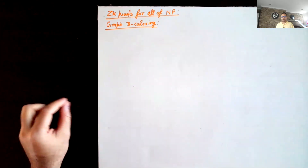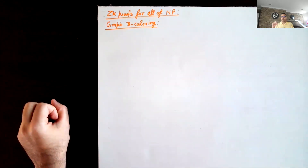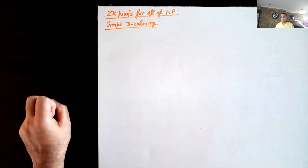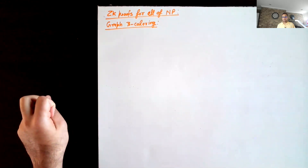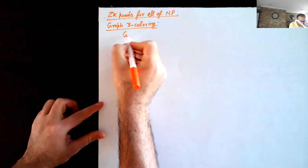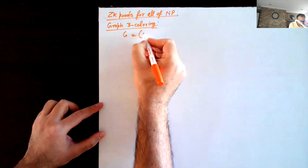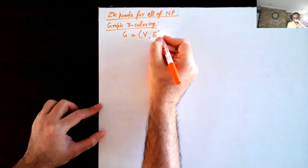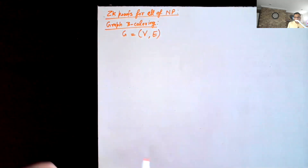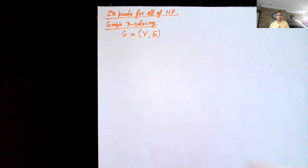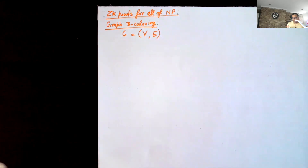In the graph three-coloring problem, you are given a graph and you have to color every vertex of the graph such that for any edge, the two vertices must have different colors. The graph is represented by a set of vertices and a set of edges. Both the prover and the verifier have the description of the graph, and only the prover has the exact three-coloring of the graph as a witness.